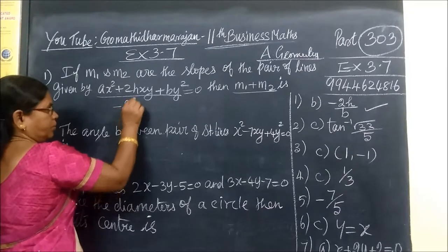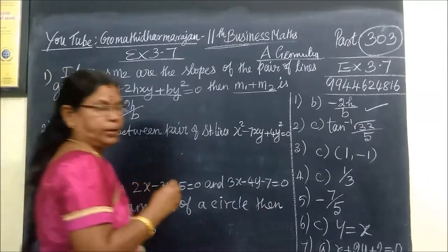The answer is minus 2H by B. Product of the slopes...